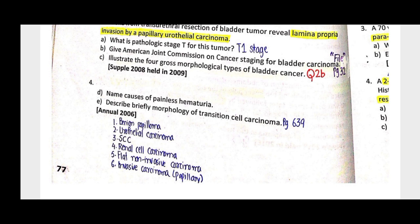The grading of urothelial/transitional cell cancer: papilloma (exophytic and endophytic), PUNLMP of low malignant potential, low grade, high grade, and carcinoma in situ — a flat non-invasive cancer. Urothelial proliferation of uncertain malignant potential is flat hyperplasia. The classic presentation is painless hematuria. Invasive carcinoma may be papillary or flat.